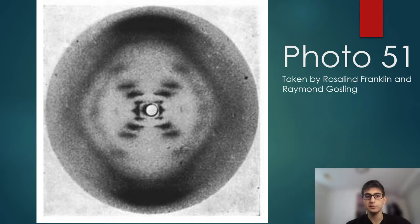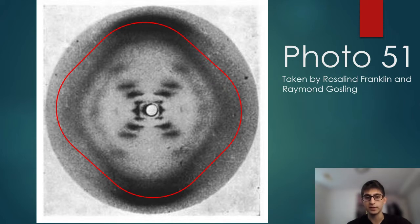First, we see the presence of a diamond-shaped outline. The lighter nature of the diamond on the top and at the bottom of the film showed Franklin that the DNA bases faced the inside of the helix, whereas the phosphate groups faced the outside.